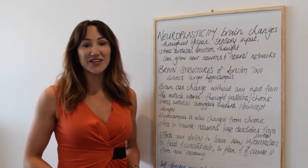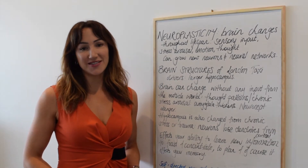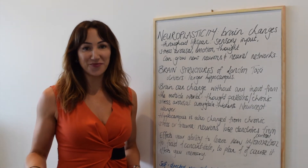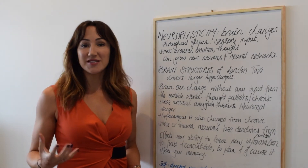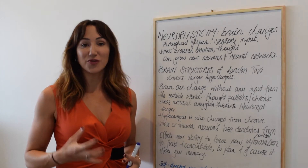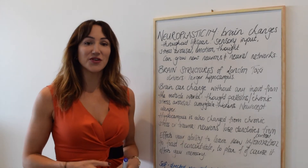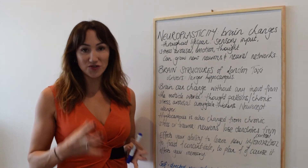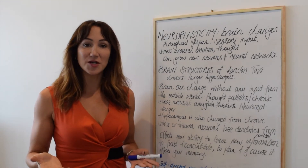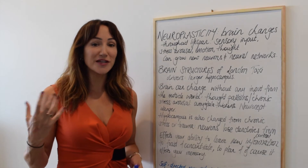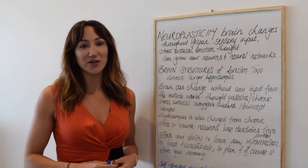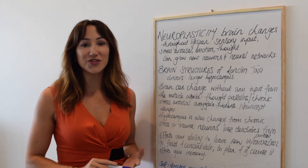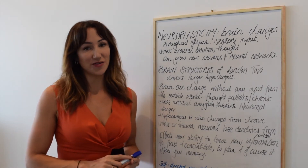Today's video is on self-directed neuroplasticity and how you can use certain trainings to change your brain. Neuroplasticity is how the brain changes throughout your lifetime. It was once thought that when you became an adult, the structure of the brain was fixed, but what we know is that the brain is always changing in regards to sensory input, habits, emotions, thoughts, and stress arousal.